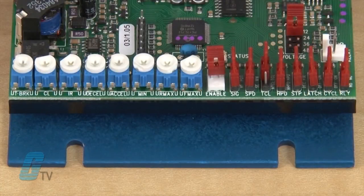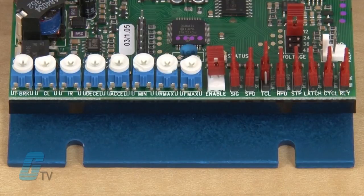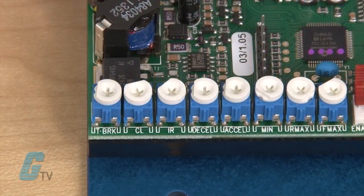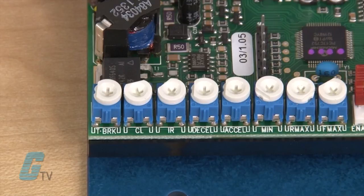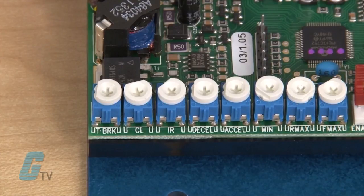The other jumpers here can help control the functions of the trim pots. These trim pots can make adjustments such as timed brake delay, current limit, IR compensation, deceleration, acceleration, min speed and max speed for forward and reverse.